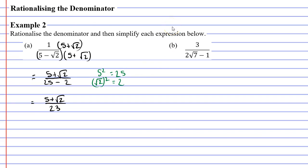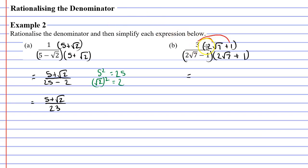Looking at our denominator, we need to multiply it by the same two terms — 2 root 7 and 1. Our first expression had a minus sign, so our second one needs to have a plus sign. The numerator also needs to be multiplied by the same thing: 2 root 7 plus 1. So what do we get when we multiply 3 by (2 root 7 plus 1)? We need to expand our brackets: 3 times 2 root 7 — 3 times 2 is 6, giving us 6 root 7. And 3 times 1 is 3, so we have plus 3.